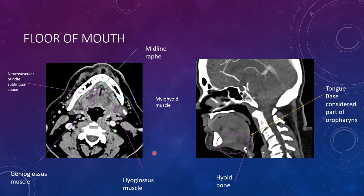The floor of the mouth is made up of a bunch of muscles. The midline raphe is just a fatty line, but it tells you you're at the floor of mouth. Just lateral to the midline raphe, you have the genioglossus muscle — paired muscles. Here's the sublingual space, which contains the neurovascular bundle. Here is the hyoglossus muscle, which is lateral to the genioglossus muscle. And then the mylohyoid muscle is the outer aspect of the floor of mouth: mylohyoid, hyoglossus, genioglossus.